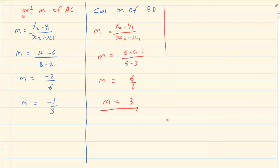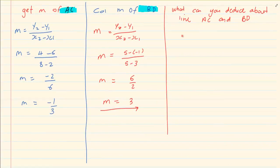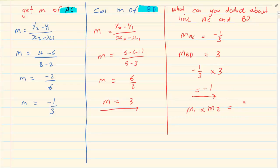Then they would ask you what can you decide regarding line BD and line AC. If you look at their gradients. The gradient of AC is equal to minus a third. And the gradient of BD is equal to 3. Now look. Minus a third times 3 is equal to minus 1. What we know is that m1 times m2 is equal to minus 1. Therefore they are perpendicular.